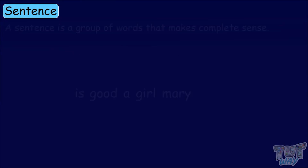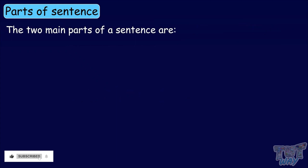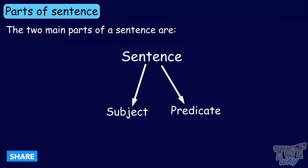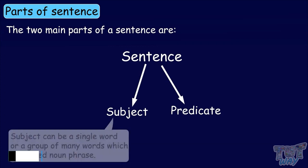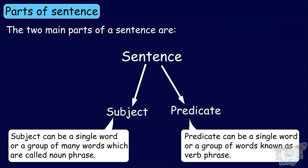We know a sentence is a group of words that makes complete sense. The two main parts that constitute a sentence are subject and predicate. Subject can be a single word or a group of many words called a noun phrase. Predicate too can be a single word or a group of words known as a verb phrase.